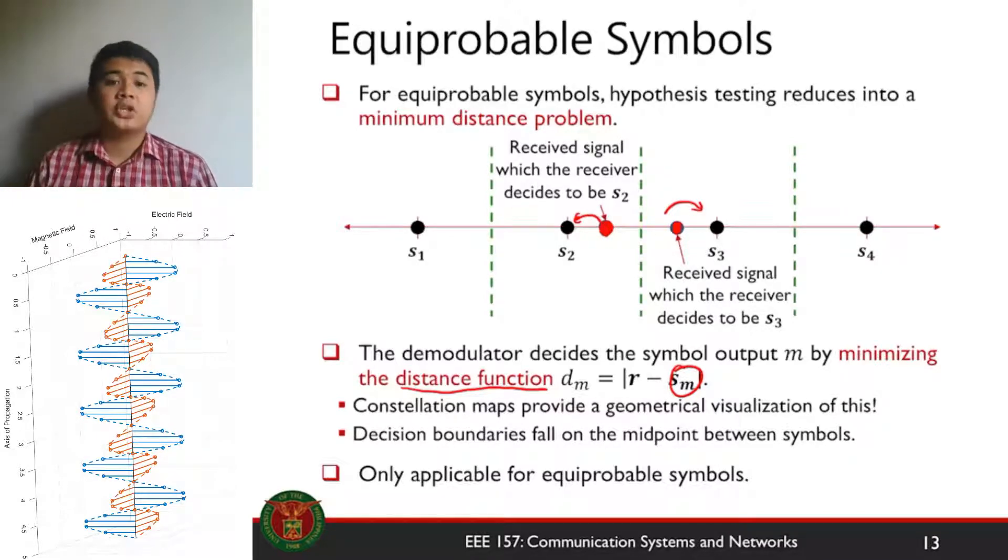This is one big advantage of using your constellation maps. You will be able to visualize when you're trying to demodulate it yourself. You're able to visualize which symbol is sent based on the observation. Just a note that this setup where your decision boundary is found in the middle between the two is only applicable for equiprobable symbols.